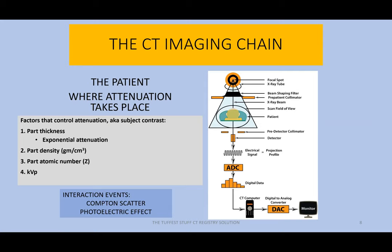Another factor controlling attenuation is part atomic number — the Z — the number of protons found within the nucleus of an atom of that material. Like bone: it's made up of calcium, which has a different atomic number than hydrogen or oxygen. Calcium is around 20 where oxygen is 8. The higher the atomic number, the greater the amount of attenuation. In fact, for any of the first three — part thickness, part density, part atomic number — as any of those three increase, attenuation increases. Conversely, as any one of those three decreases, attenuation decreases.